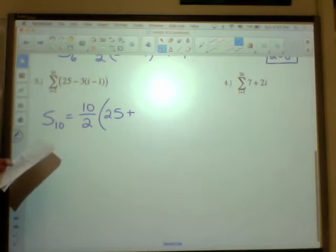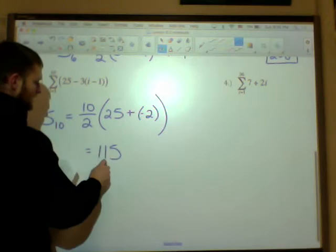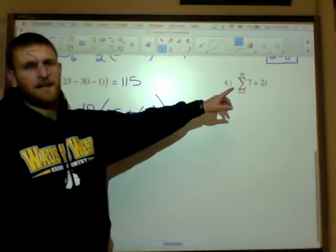So technically I'm going to get a negative 2 as my last term. I add that 25 and negative 2, I get 23, multiply that times 5, and I get a sum of 115. So this equates to 115.